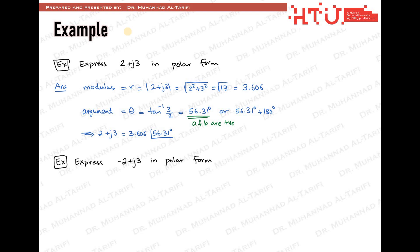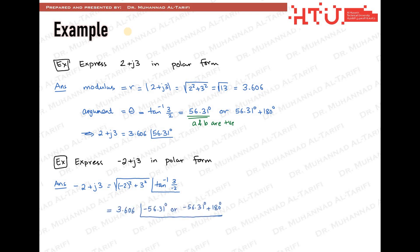Let's have the same example with a slight modification — all values are the same, but the real part is now negative. The magnitude of minus 2 plus j3 is not changed from before. But the argument is now tan inverse of 3 divided by minus 2, which equals minus 56.31 degrees using the calculator. The other solution is minus 56.31 degrees plus 180 degrees. Since minus 2 plus j3 exists in the second quarter, we choose 123.69 degrees. The transformation is complete: minus 2 plus j3 equals 3.606 at the phase of 123.69 degrees.